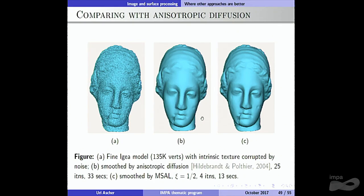Once again, the IGEA statue: with noise, and here is our result without the noise. It's not just optimal complexity — it takes four iterations and 13 seconds on a computer from 12 years ago, on 135,000 vertices. It's not a small problem. So there are sometimes reasons not to use the global paradigm — that is the point.